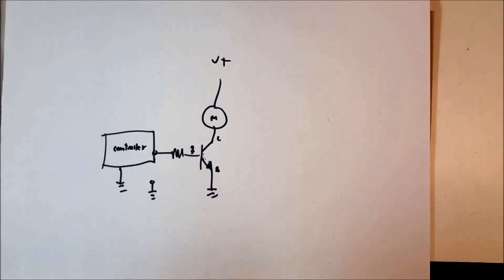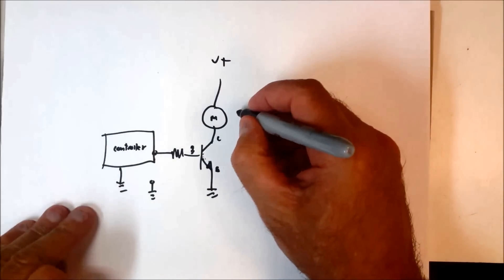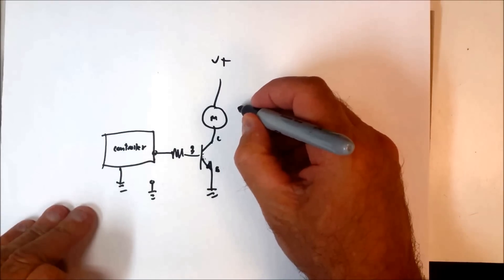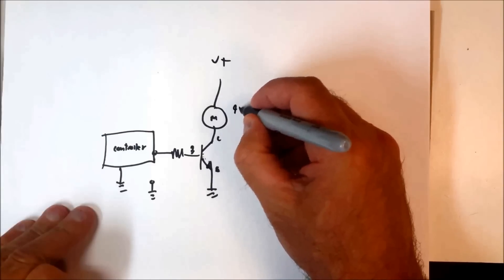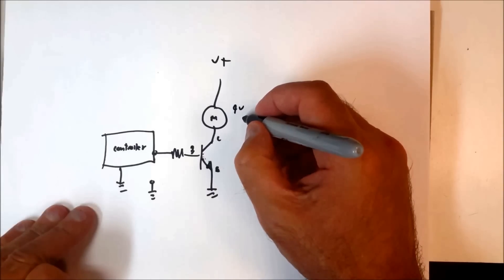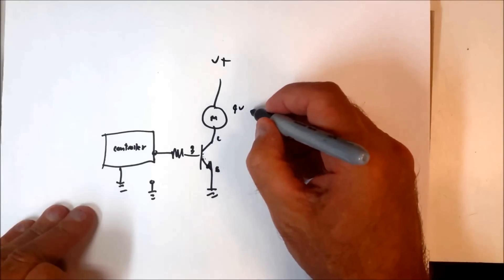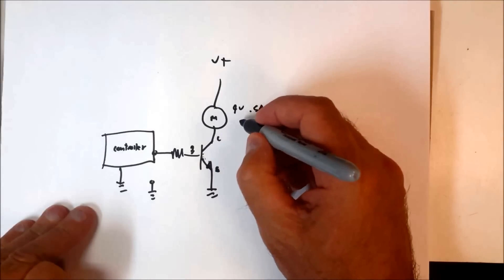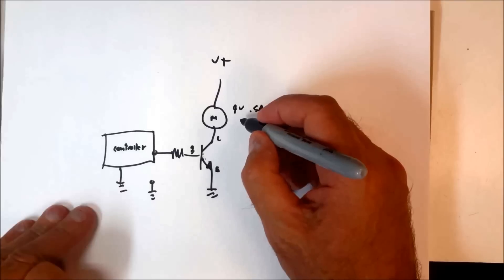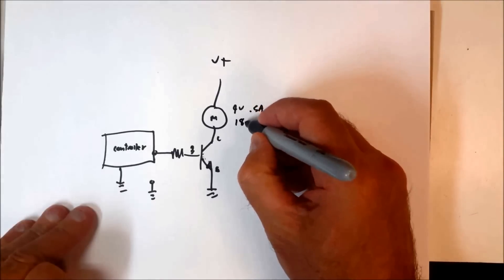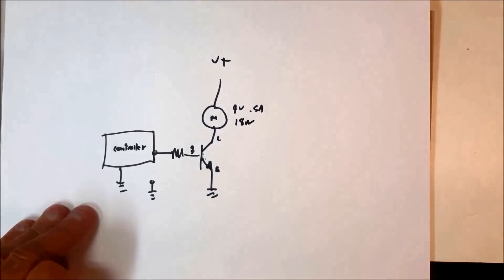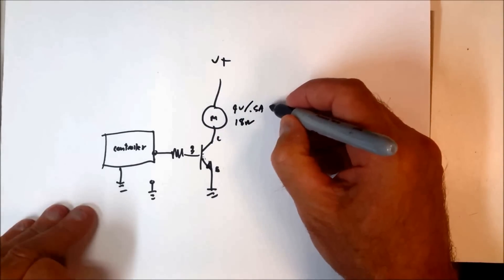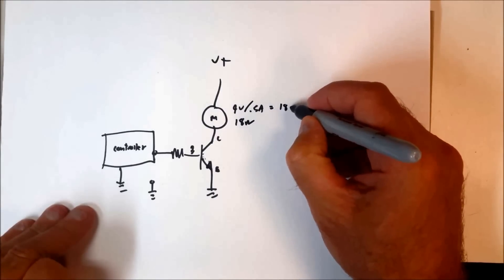In our particular case, let's look at our motor. If our motor uses 9 volts and draws 0.5 amps, then the equivalent resistance of our motor is 18 ohms — that's just 9 volts divided by 0.5 amps, which equals 18 ohms.